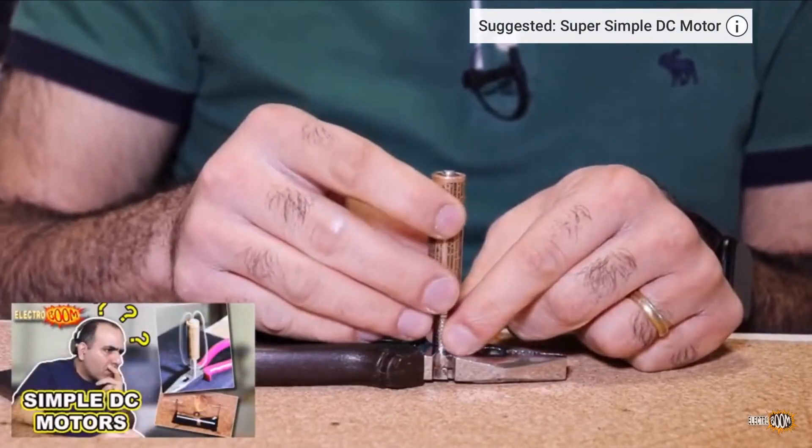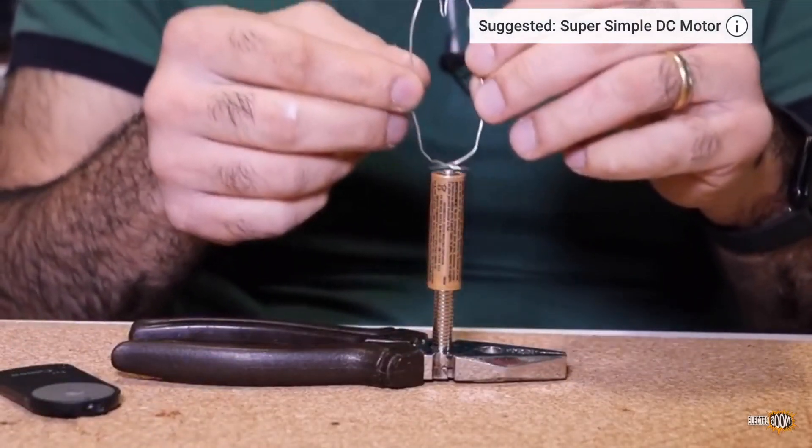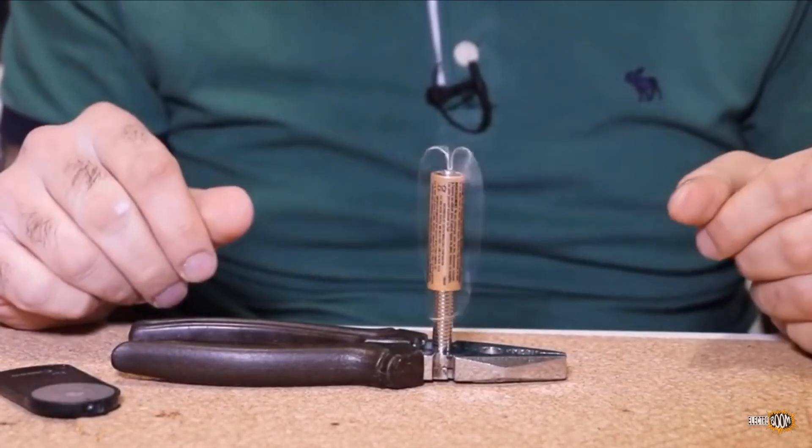You stick a battery on a magnet and short the battery using a piece of wire like this and it starts turning! Do do do do!